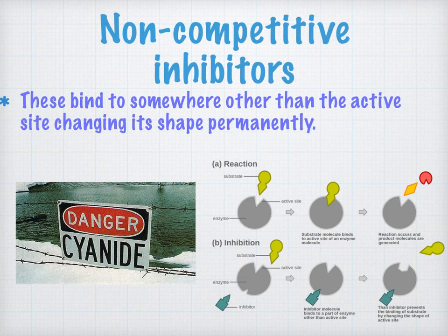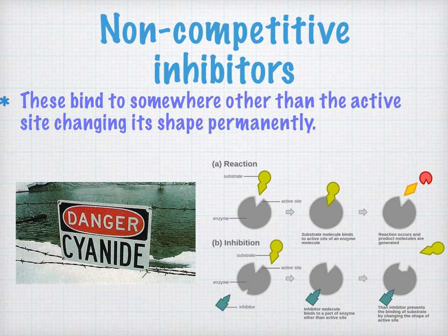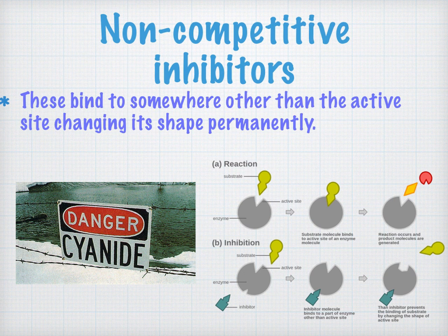Non-competitive inhibitors can also reduce the rate of an enzyme-controlled reaction. In this case, the inhibition is permanent rather than temporary, as was the case with competitive inhibitors. Non-competitive inhibitor molecules usually don't look anything like the substrate molecule and don't bind to the active site at all — they bind somewhere else on the enzyme molecule.